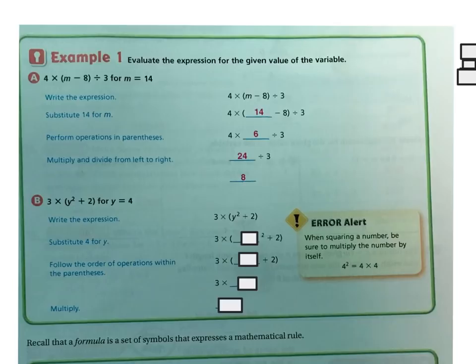Let's look at the next expression. We have 3 times, and in parentheses, y to the second power plus 2. For y, we're going to put in the number 4. We write the expression: 3 times, y squared plus 2. We substitute 4 for y. Now you do parentheses first, but inside the parentheses is an exponent, so you do the exponent first. 4 to the second power is 4 times 4, which is 16. Now we finish what's in the parentheses: 16 plus 2 is 18. So now we have 3 times 18, and 3 times 18 is 54.